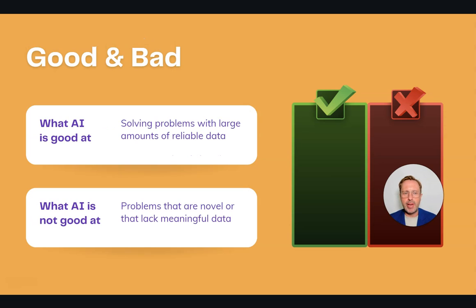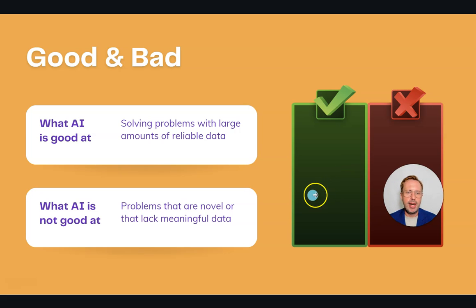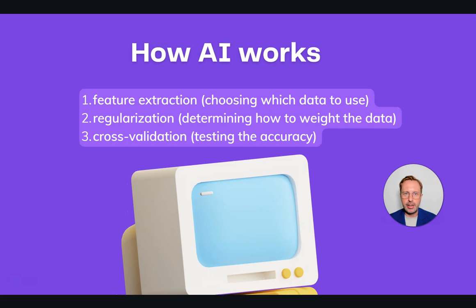What is AI good at and what is it bad at? It's really good at solving problems with large amounts of reliable data — that's why in large companies AI is a prime use case, and less so in smaller businesses. AI is not particularly good at novel problems that lack meaningful data. That's why with startups dealing with novel problems and trying to create a new category, AI won't help as much — you need to experiment and rely on human intuition.